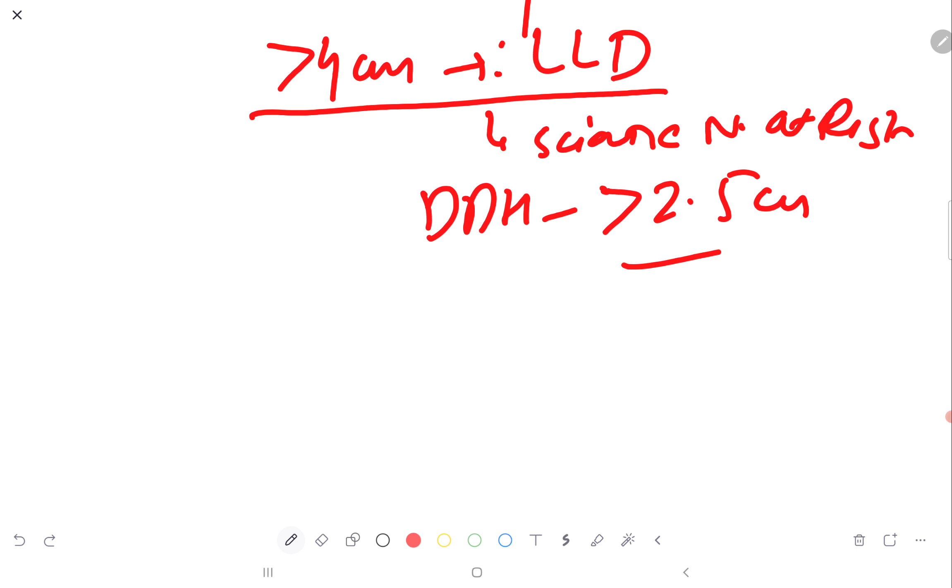If you try to correct the more than 4 cm limb length discrepancy, then sciatic nerve is at risk of stretch injury. In the DDH, you should not correct more than 2.5 cm and in the normal people more than 4 cm should not be corrected.